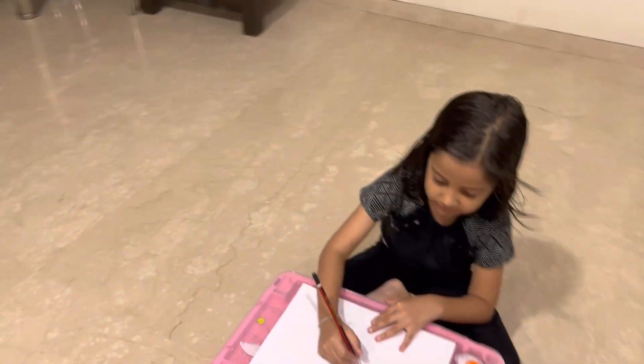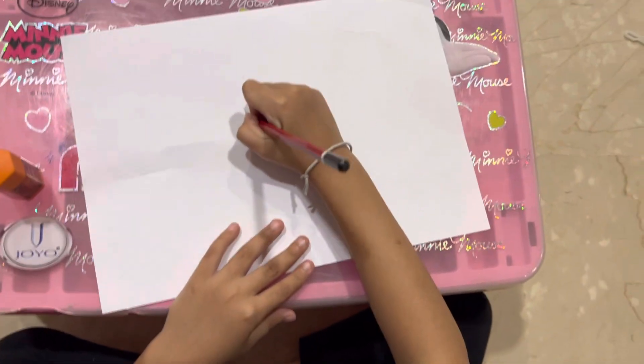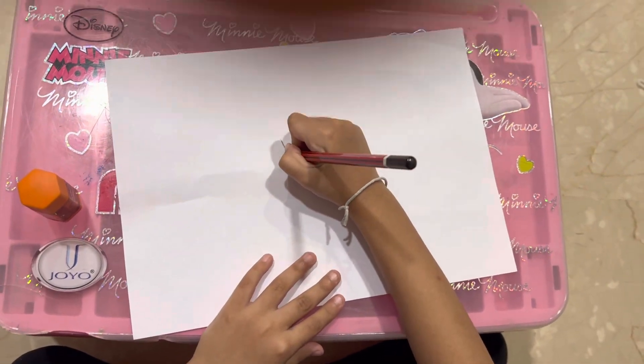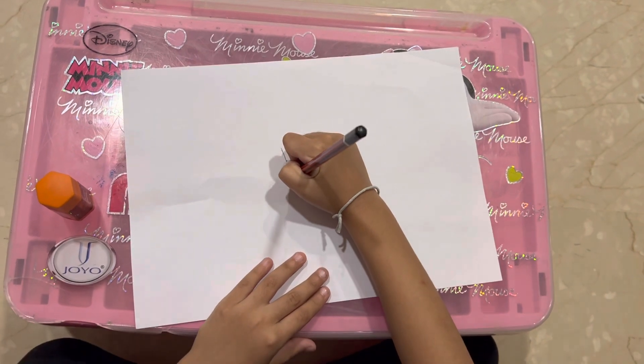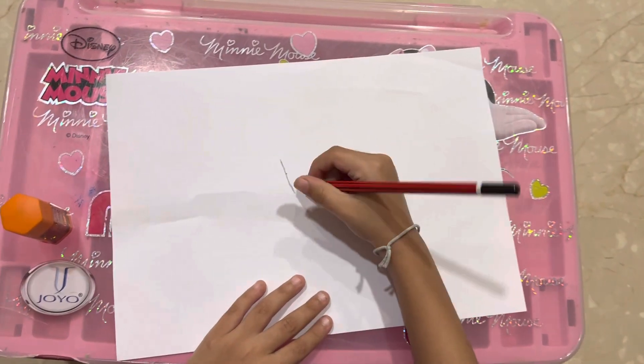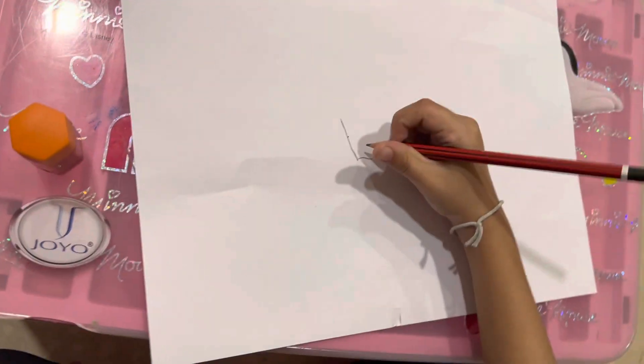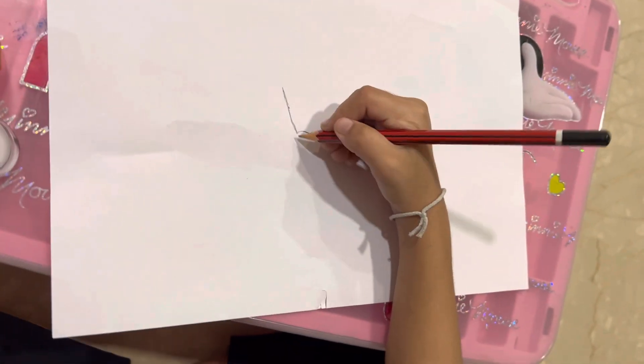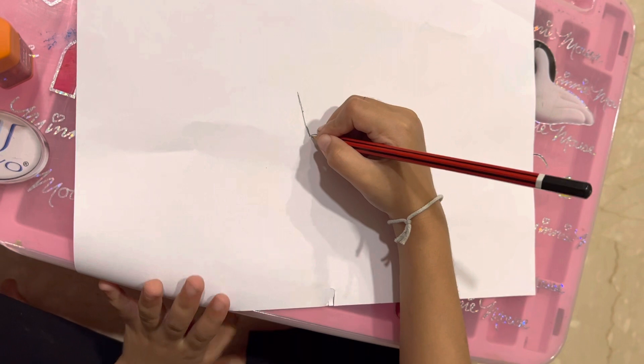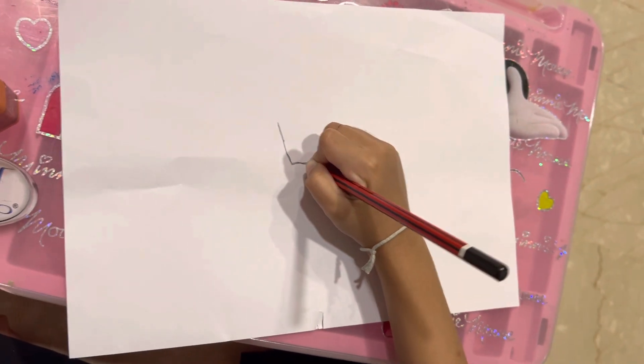So first, we need to make its pot. It will be big enough. And make a slanting line. And then make a straight line.